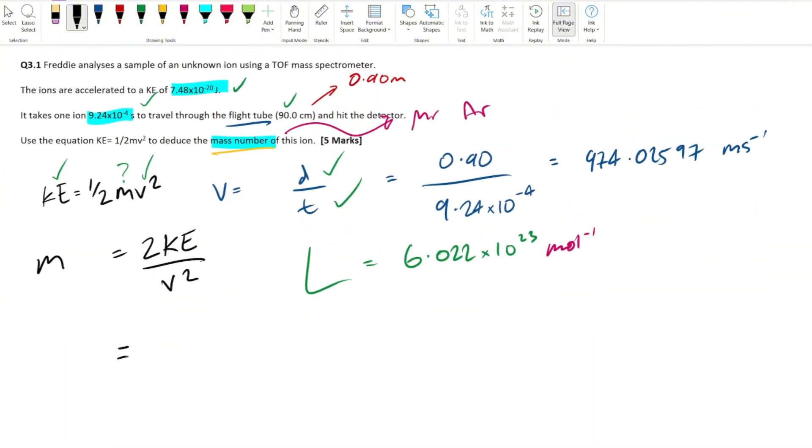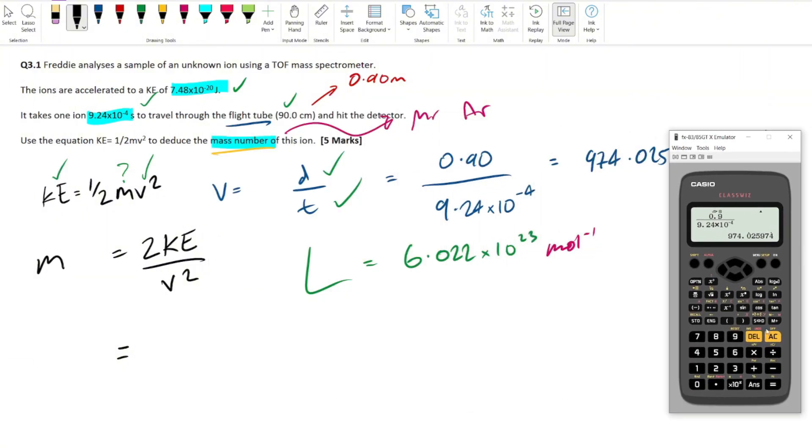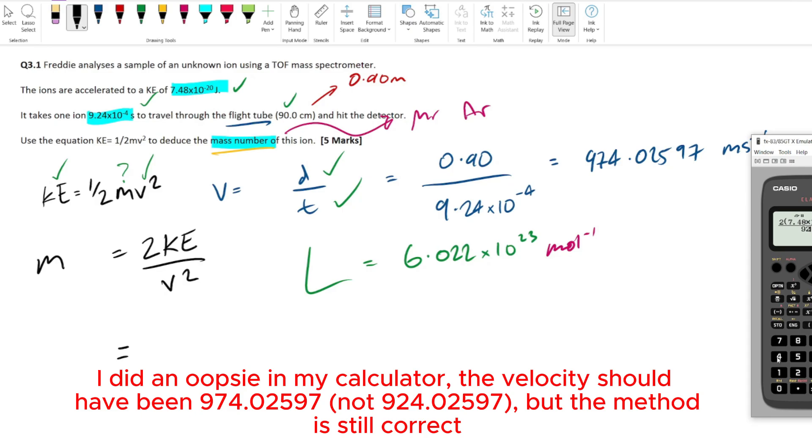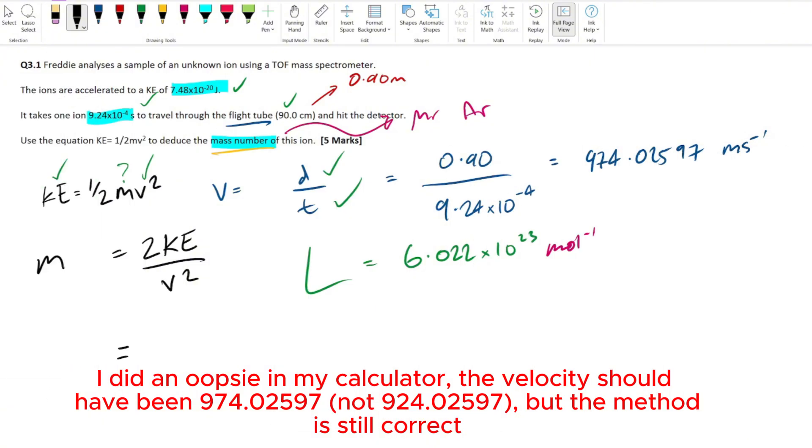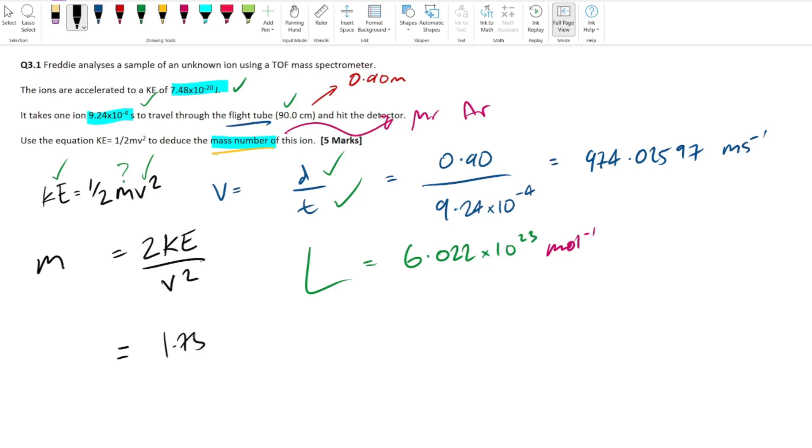All I'm going to do now is put this in my calculator, but you have to be very careful with units. Let's get our calculator back on the screen. We have two lots of kinetic energy: 7.48 times 10 to the minus 20. Bracket that up. And what's on the denominator? We have V squared. Velocity we worked it out to be 974.02597, square that up, and this is 1.7521175 times 10 to the minus 25. So this is our mass.